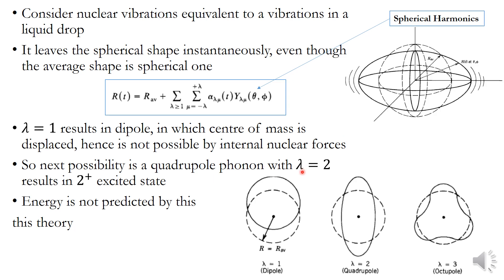The quadrupole mode with λ = 2 results in a 2+ excited state, since λ is equivalent to L = 2, giving two units of angular momentum. The parity is positive because (−1)^λ = (−1)^2 = +1. So this results in a 2+ excited state.